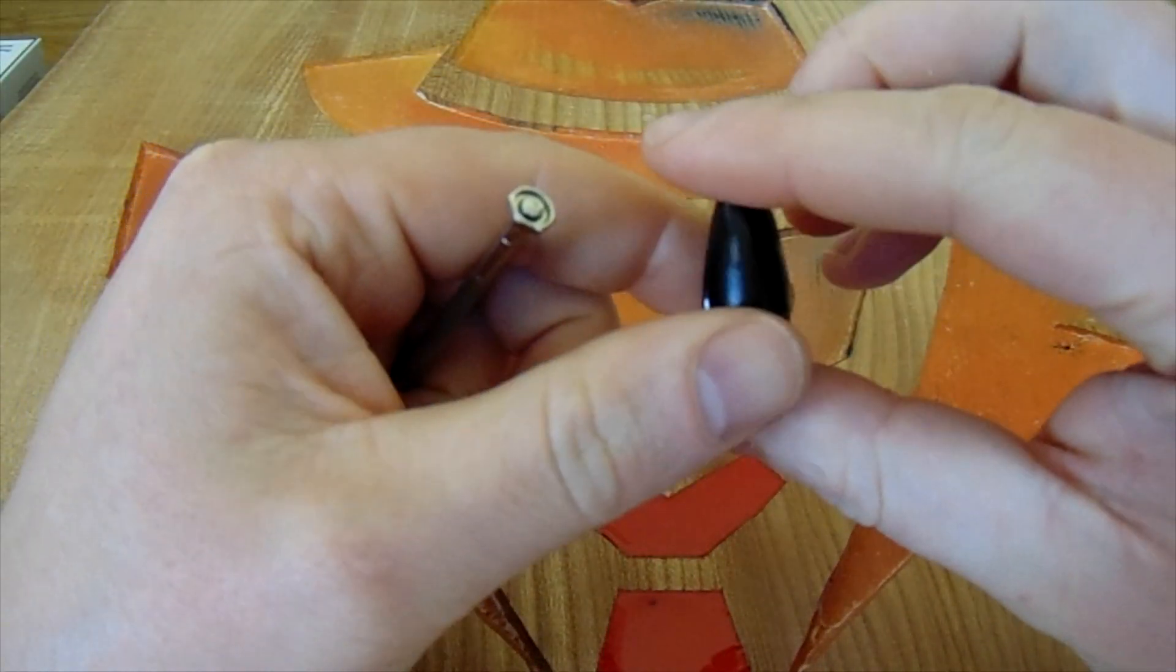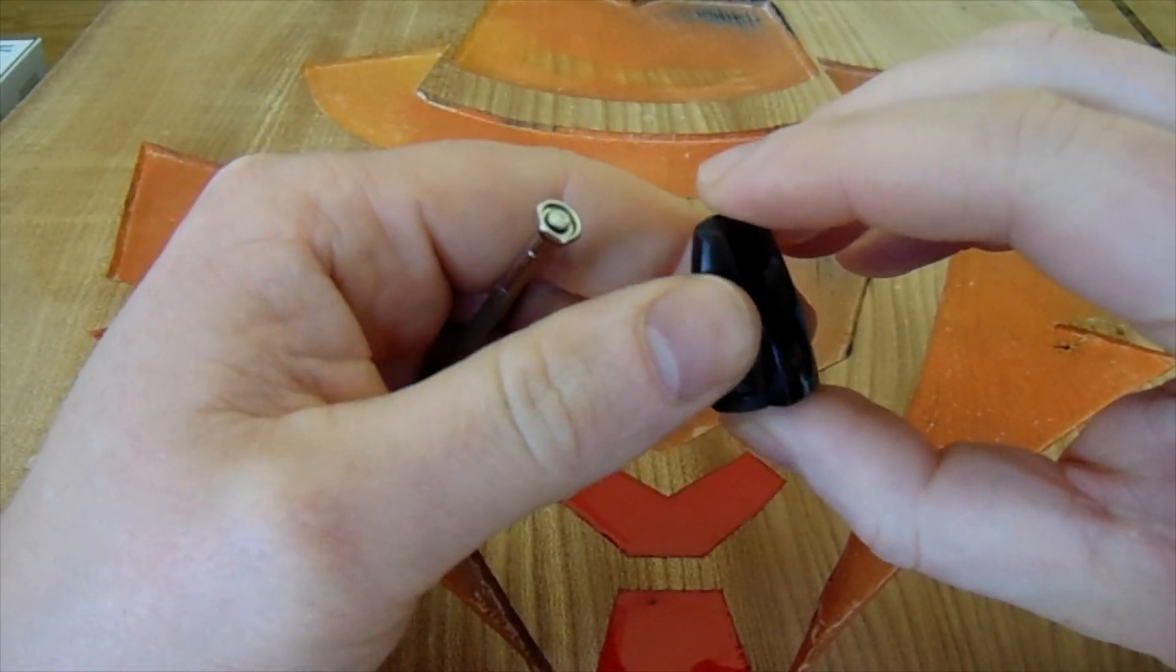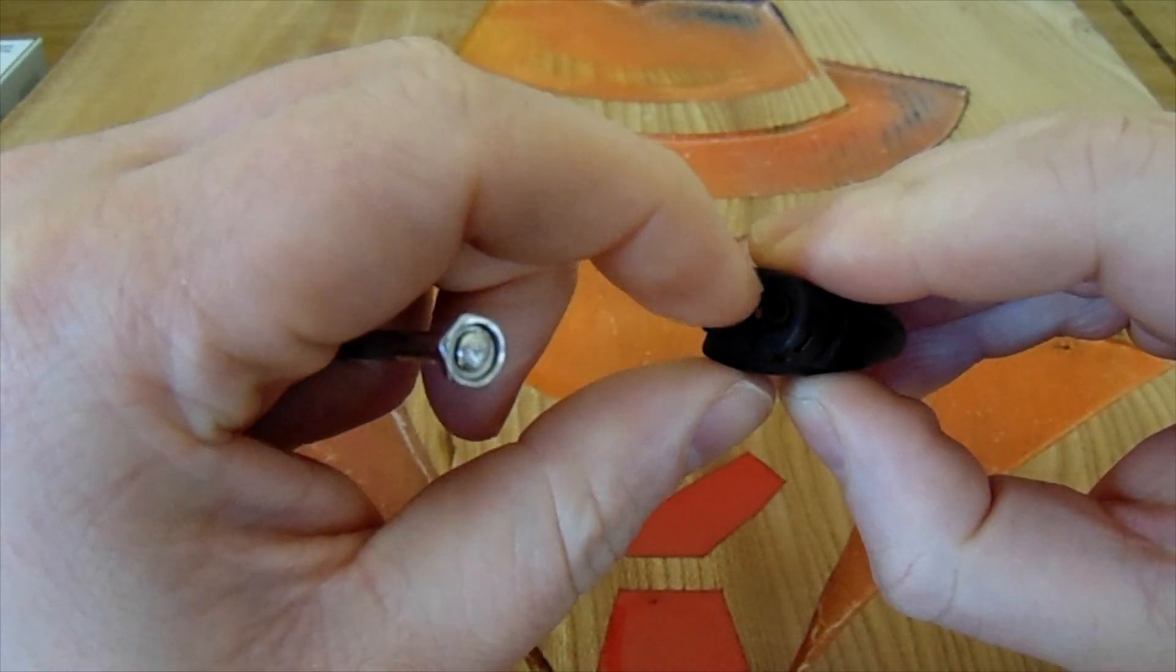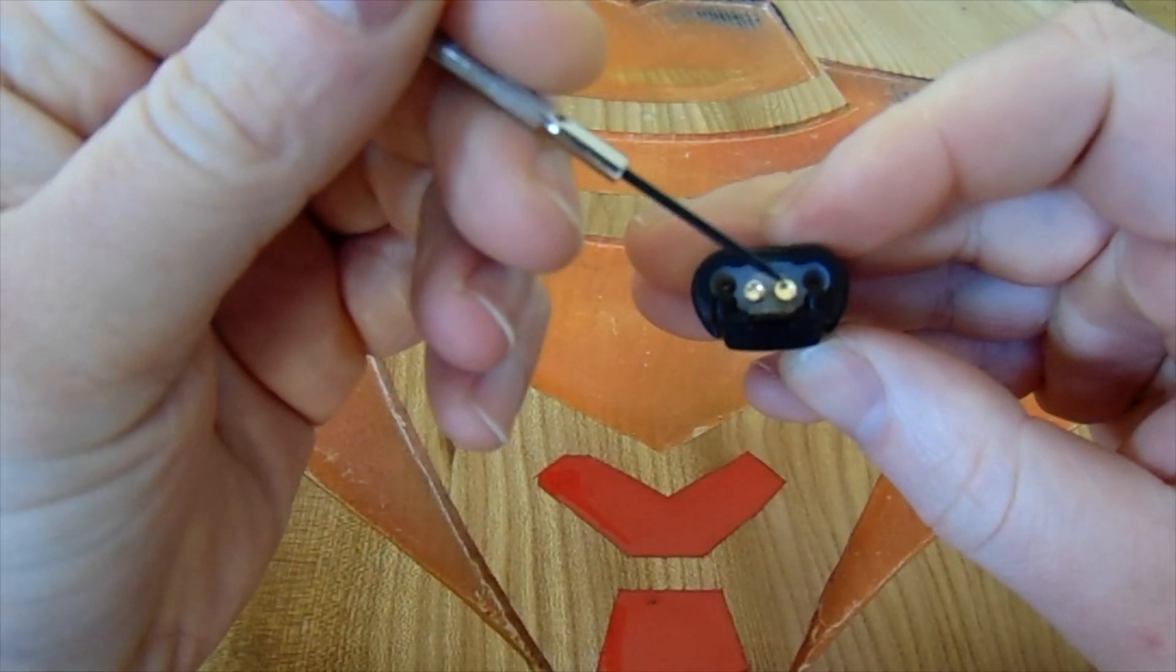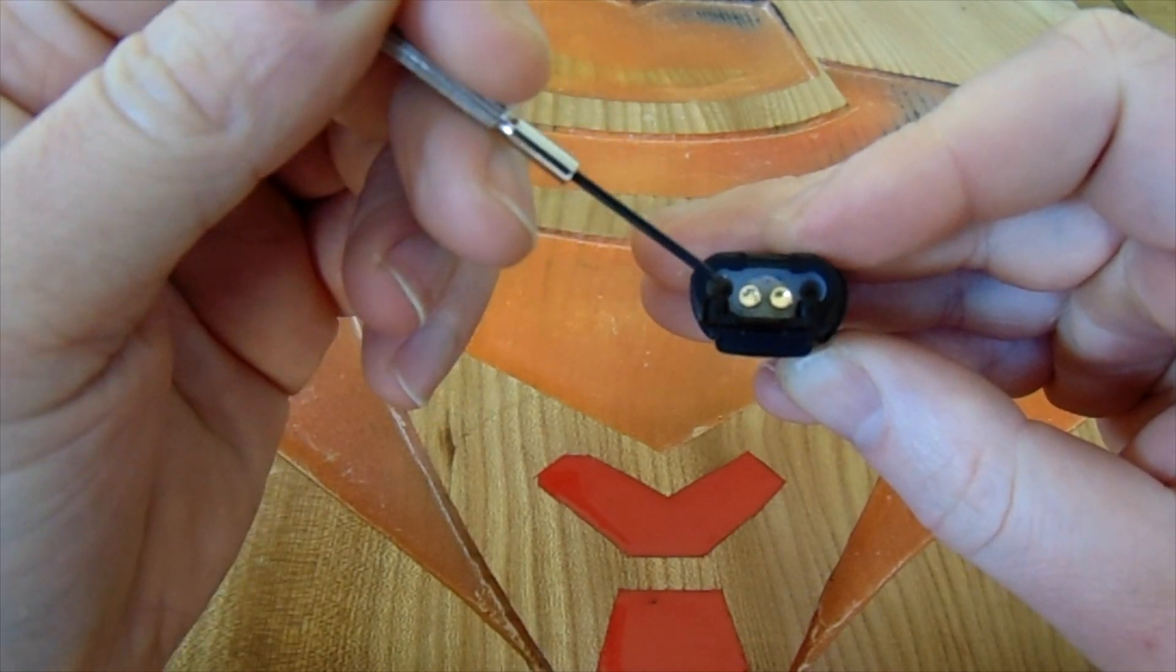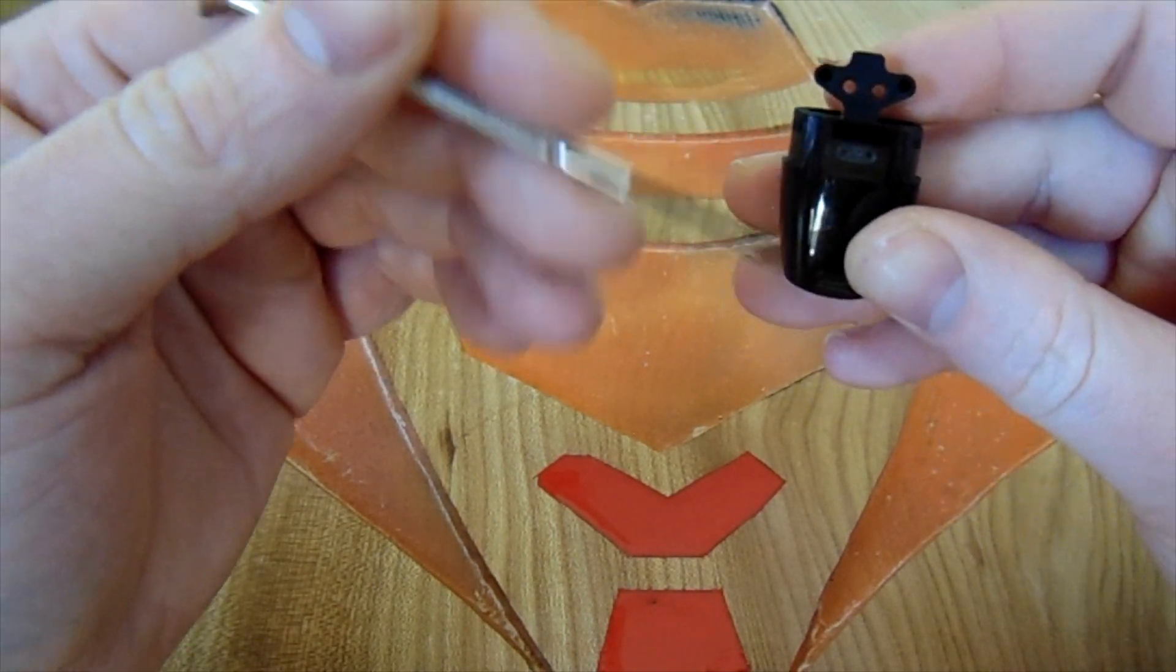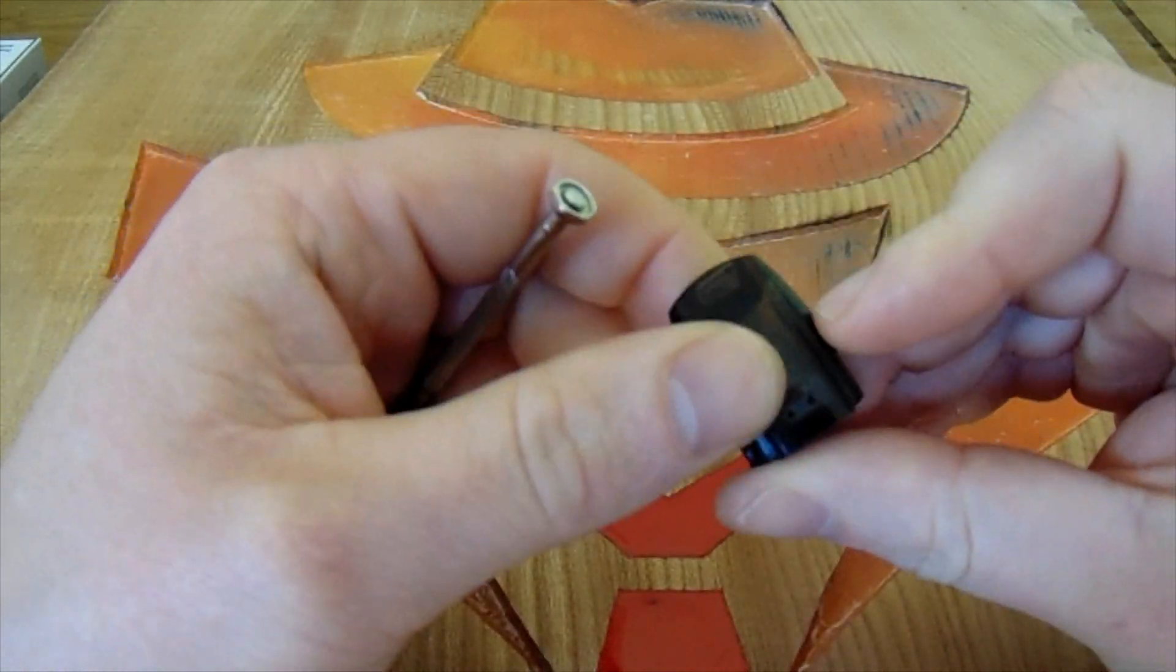So this is your pod which holds 1.5 ml of liquid and it is refillable through the bottom. You just lift this little tab up like so, and then you've got two holes, one either side to fill. You can put your juice in one hole and the air will escape out the other, so you won't flood your coil and therefore flood your airflow and get juice all in your gob.